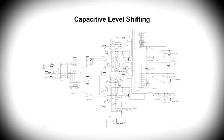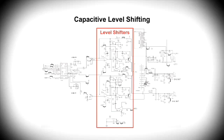Many Class D amplifiers use non-isolated high voltage gate drivers that often require audio signal level shifting at the input. Level shifting can dramatically increase design complexity, like the busy level shift circuit that you see here. High voltage drivers also have output DV/DT limitations that can result in latch-up if violated. Clearly, a better Class D driver solution would be welcome.